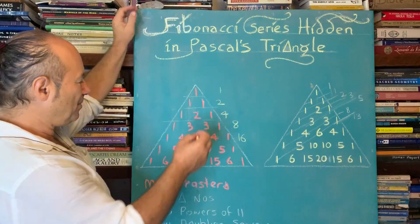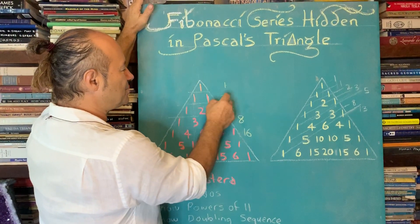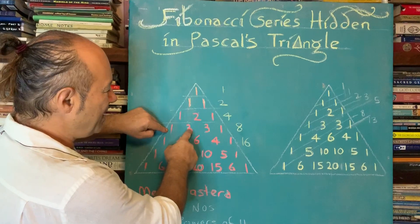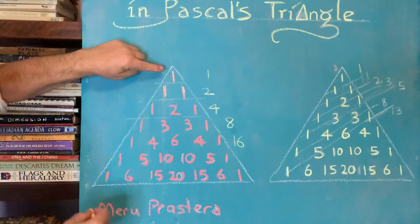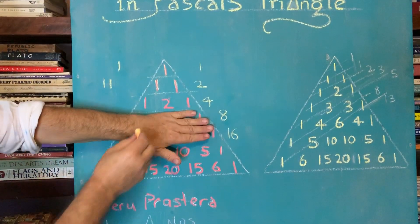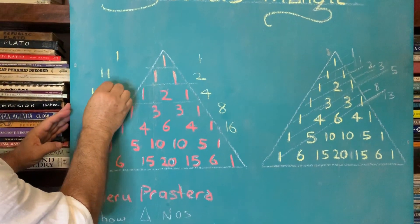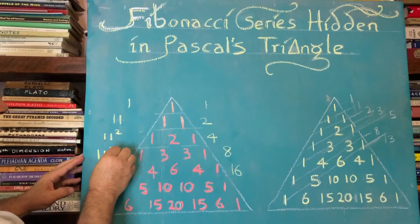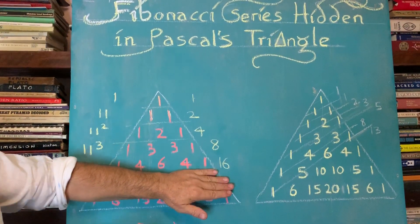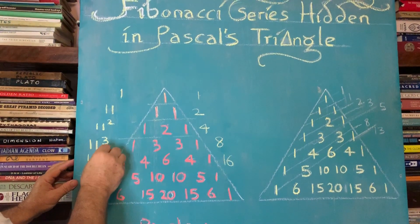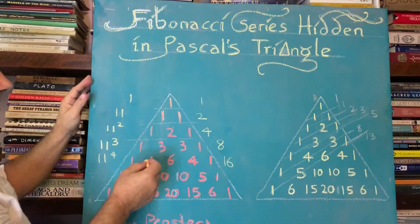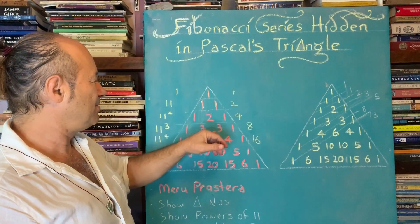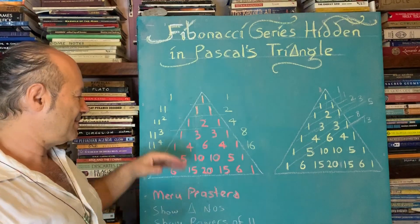If you look at the numbers differently - instead of one and one being two, think of one and one as 11. Think of one two one as 121, and think of one three three one as 1331. Notice that 121 is 11 squared, and you can predict that 1331 must be 11 cubed. Then the next number, 14641, is 11 to the fourth power. So we've got the powers of two and the powers of 11 all in one simple diagram - just by adding previous numbers we get a whole universe of information.